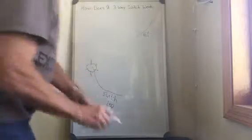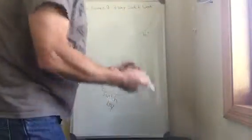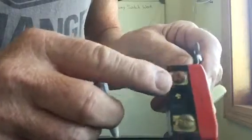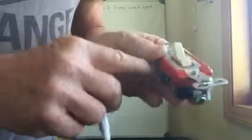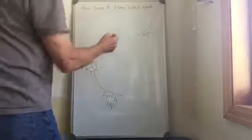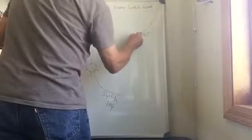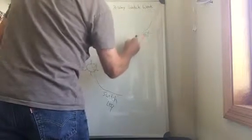A three-way switch is a switch that has three screws on it. One screw is typically a different color, and they call that the common—it's common between these two screws. We're going to set up this three-way right here and put that hot wire on the common terminal.